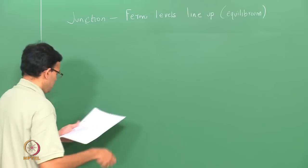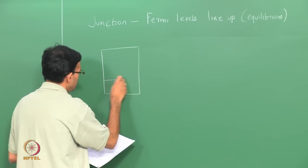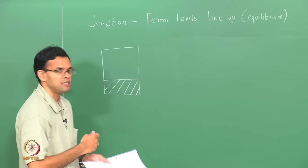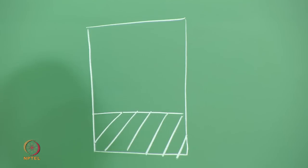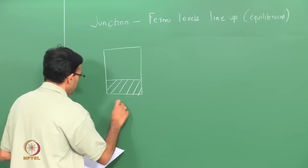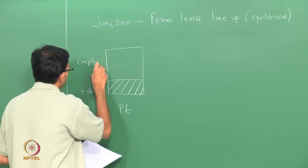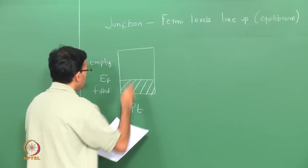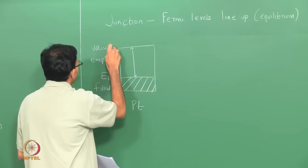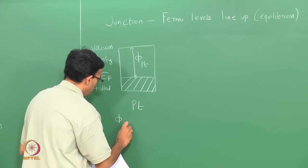Consider the case of two metals. For this example, I will choose platinum and molybdenum. Metals are characterized by having a continuous valence and conduction band, so there are filled and empty states, and E_F — the Fermi energy — represents the boundary between the filled and empty states. The distance from the Fermi level to the vacuum level is the work function, phi of platinum. Platinum has a work function of 5.36 electron volts.